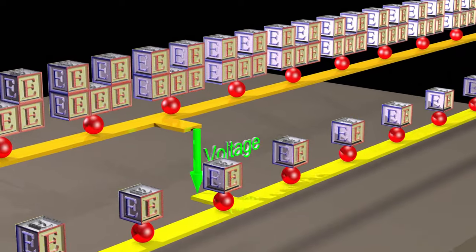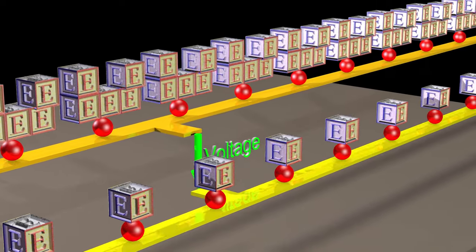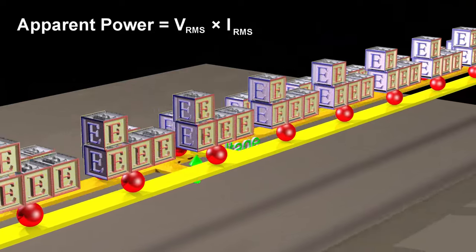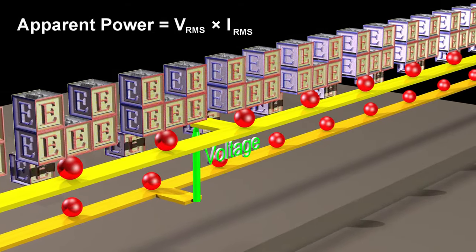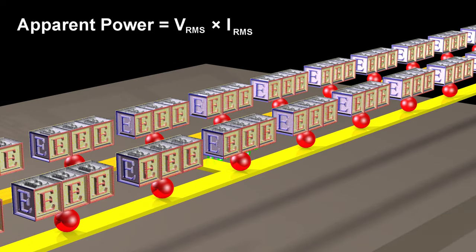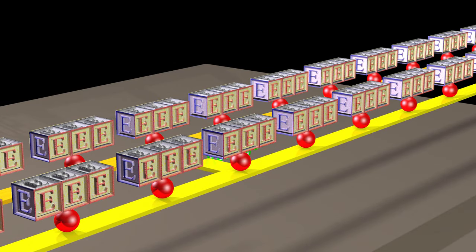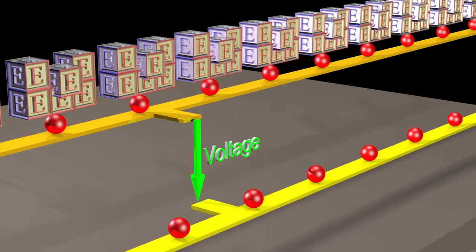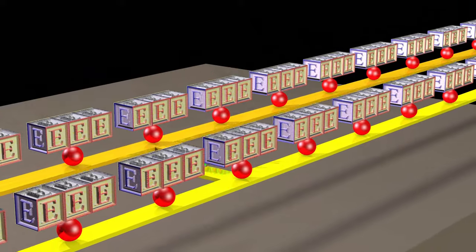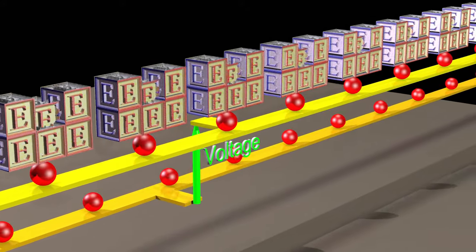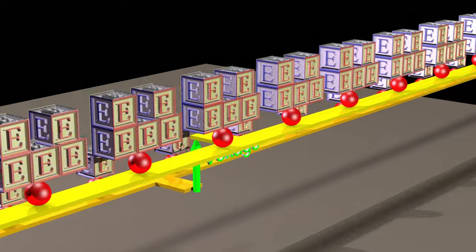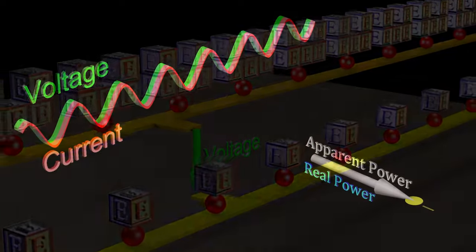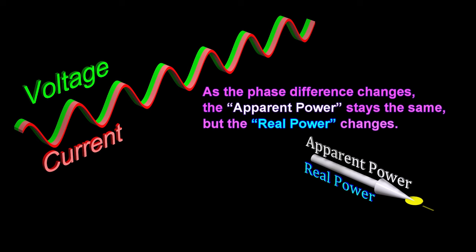We say that the apparent power is equal to the RMS voltage multiplied by the RMS current. But for the real power to be at its maximum for a given voltage and current, the voltage and the current need to be in phase with one another. As the phase difference changes, the apparent power stays the same, but the real power changes.